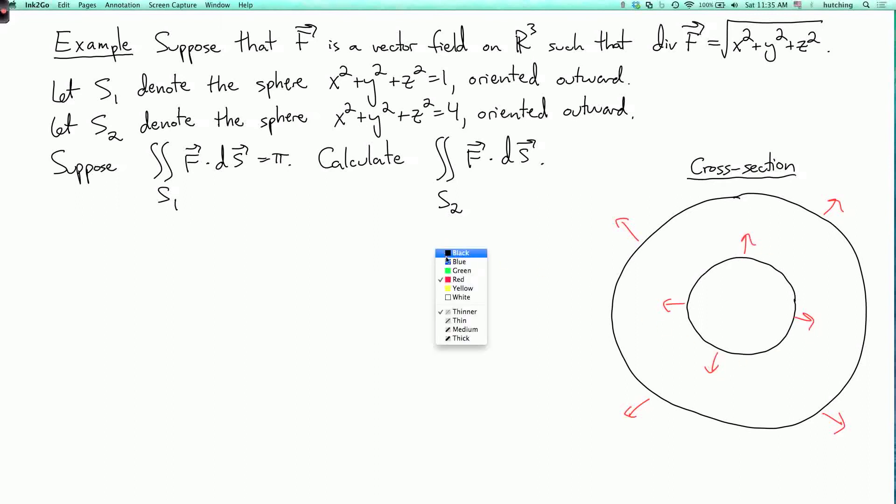And these are oriented outward. So this is S1, and this is S2, and I'm given the flux across S1, and I'm supposed to find the flux across S2.